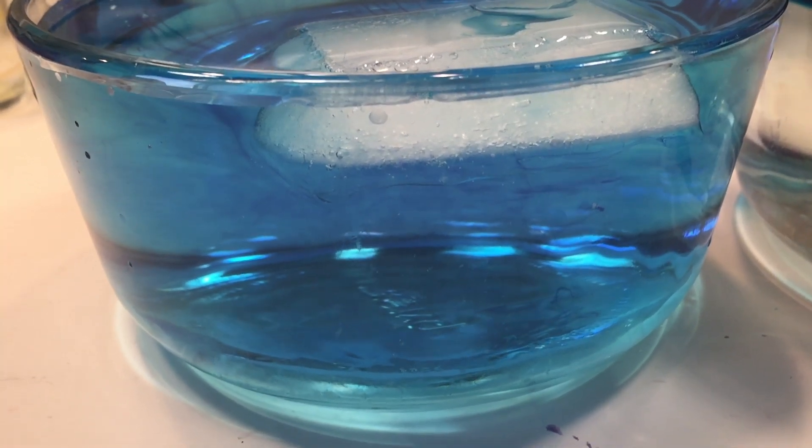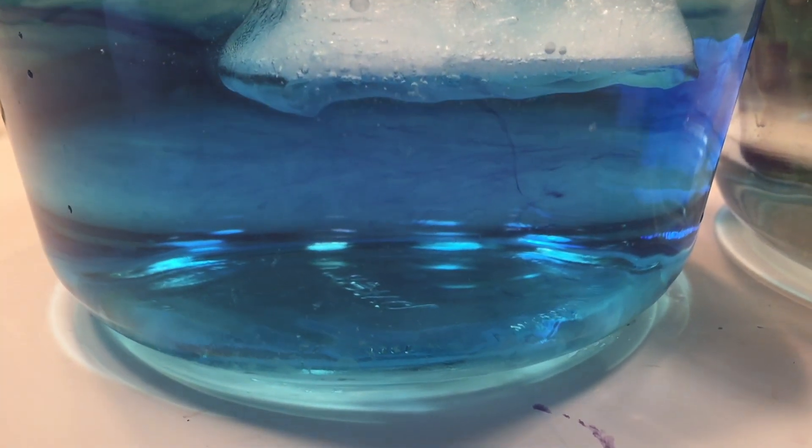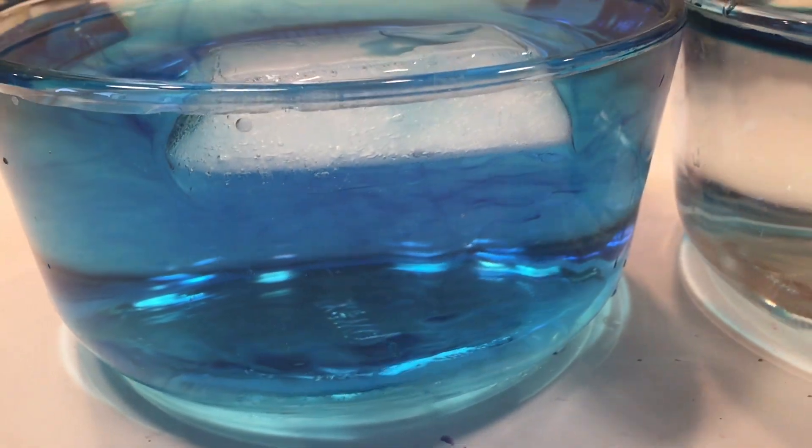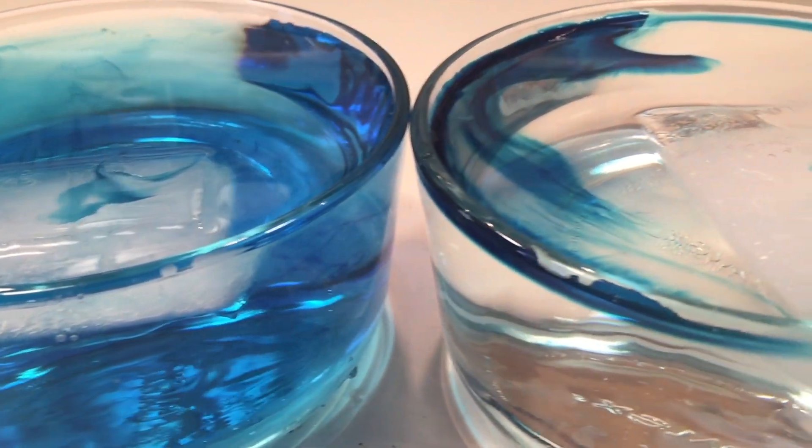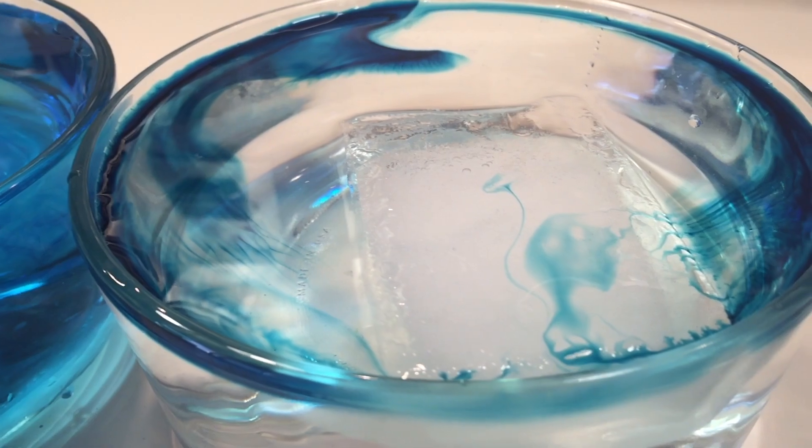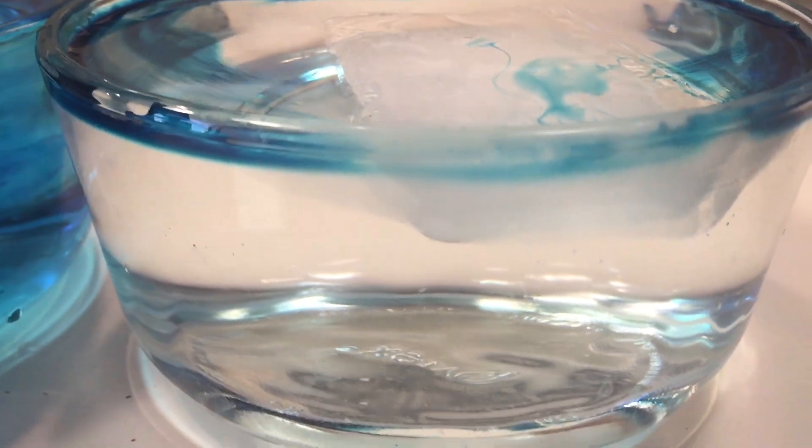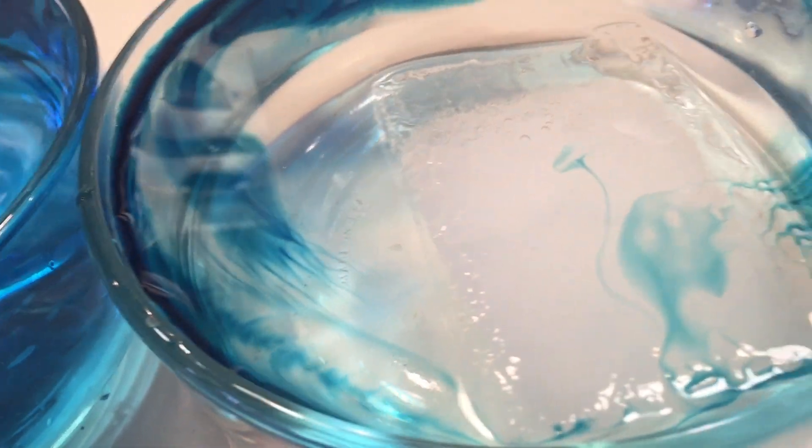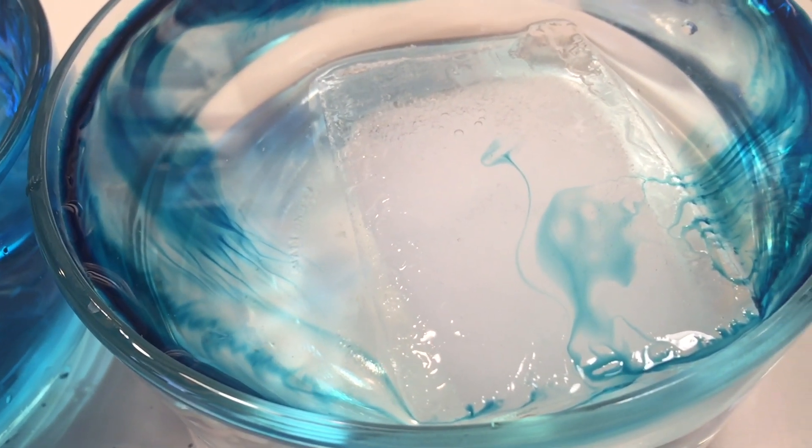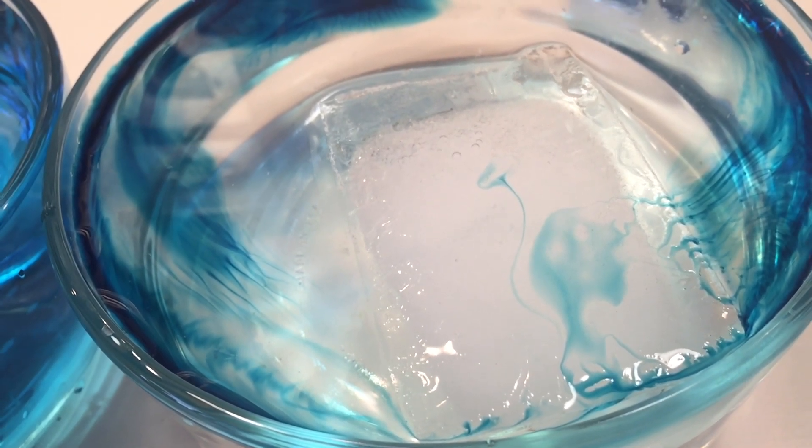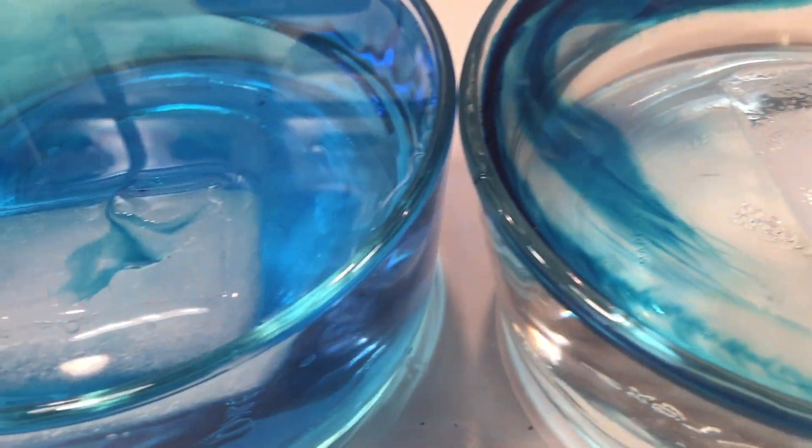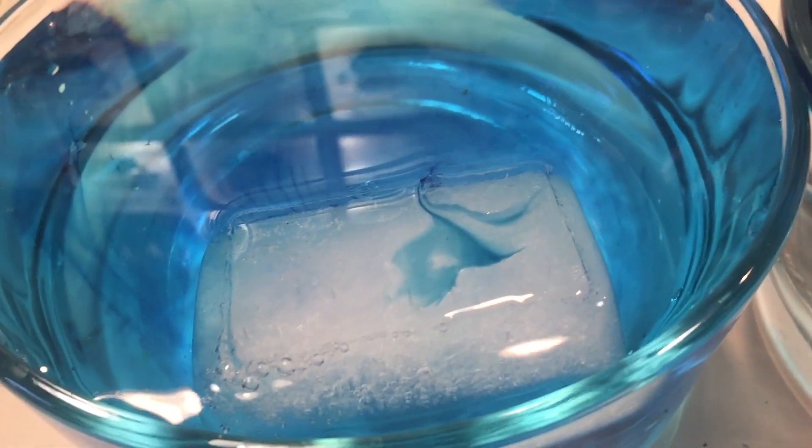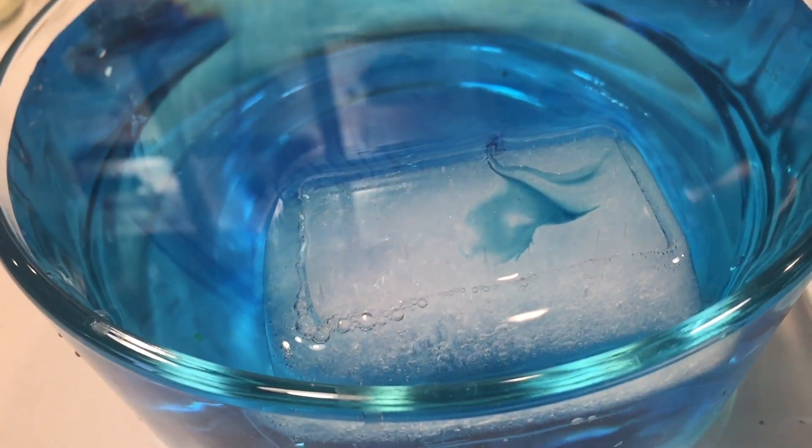You can see that the blue dye has completely dispersed in the fresh water. And over here with the salt water, you can see that the blue dye is resting on top of the salt water. You can see that that's completely clear. Let's take a look at the ice cubes. That ice cube looks fairly large, and this one still looks large but you can tell that it is smaller.